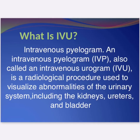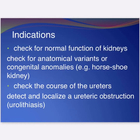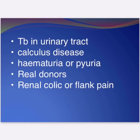Indications include: checking for normal kidney function, checking for anatomical variants like horseshoe kidney, identifying causes of ureteric obstruction and the location of ureteric obstruction, TB in the urinary tract, calculus disease, hematuria, oliguria, renal donor evaluation, and renal colic infection.